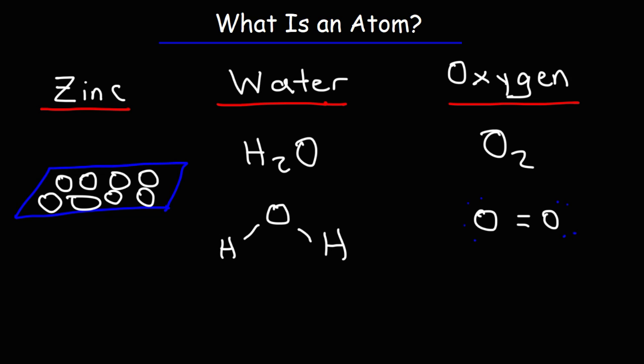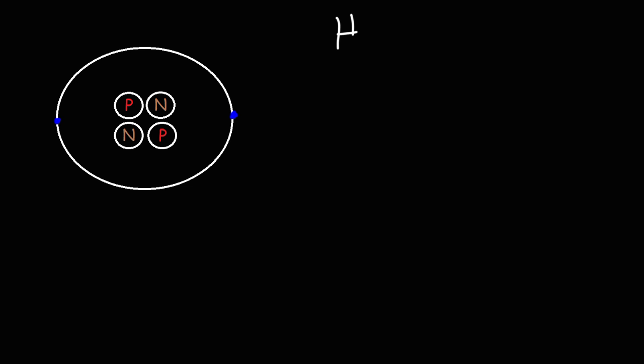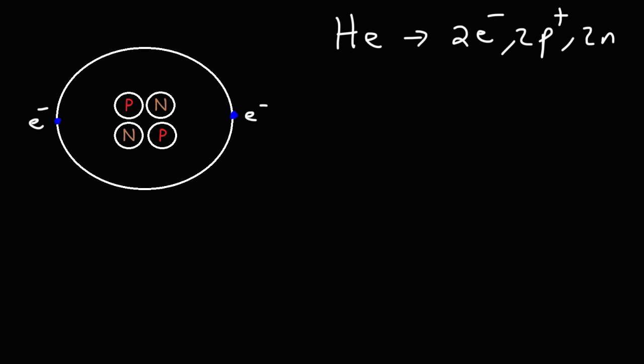Now let's talk about the structure of an atom. Here is an illustration of an atom of helium. Helium contains two electrons, two protons, and two neutrons. The electrons, which carry a negative charge, are located outside of the nucleus. They form the electron cloud. Inside of the atom is the nucleus, which is composed of neutrons and protons. Protons are positively charged subatomic particles, whereas electrons are negatively charged. Neutrons are neutral. Inside of an atom, the electrons are moving very, very fast.